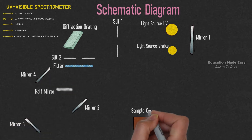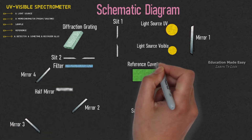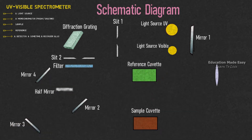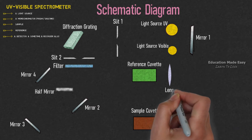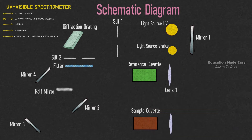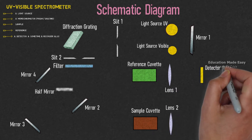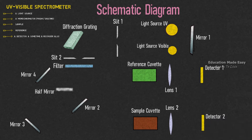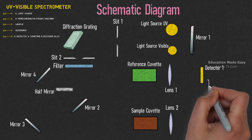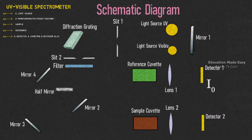Then we have a sample cuvette and a reference cuvette. After each cuvette we have one lens each — lens 1 and lens 2. After the lenses we have two detectors: detector 1 and detector 2. The intensity of light at detector 1 is denoted by I0, whereas intensity of light at detector 2 is denoted by I.